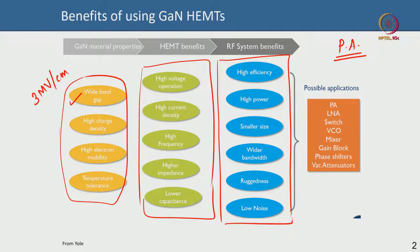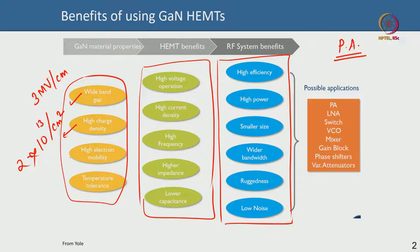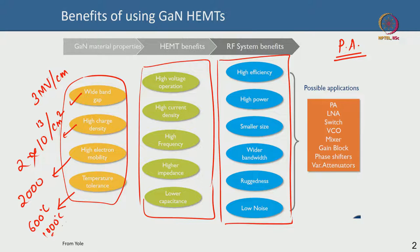Because of polarization, which is a material property, you get a very high sheet charge density up to 10^13 per cm² in AlGaN-GaN, and even 2×10^13 in AlN-GaN. Electron mobility is fairly high at 2000 cm²/Vs, and devices can operate at very high temperatures — people have demonstrated operation at 600°C or even 1000°C, because it is a very wide bandgap material.